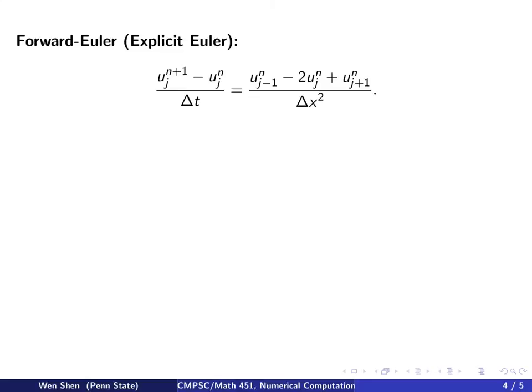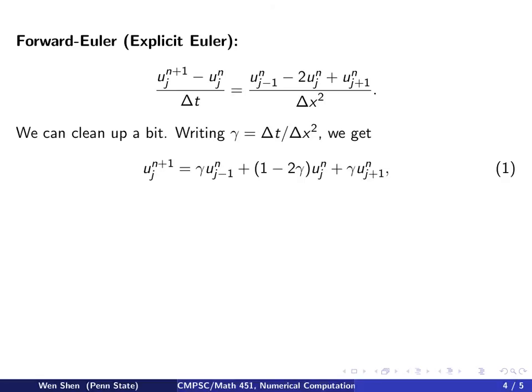The first method we will learn here is an explicit method called forward Euler, also called explicit Euler time step. We approximate the derivative at xj tn using information forward in time for the time derivative. So it would be u j n plus 1 minus u j n divided by delta t equals to u xx. We can clean up a bit. Multiply this equation by delta t on both sides, and we have this constant delta t over delta x square on the right-hand side. To simplify notation, let's call this gamma.